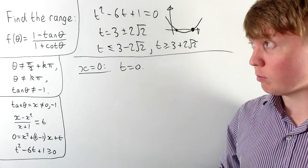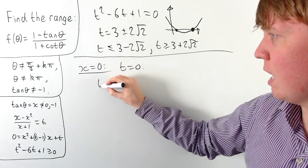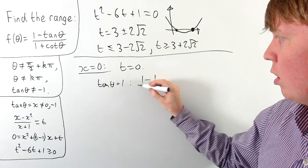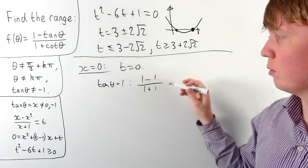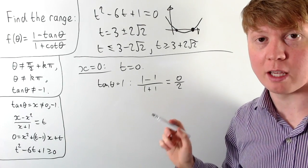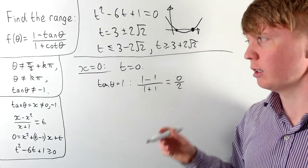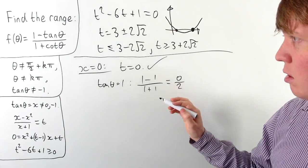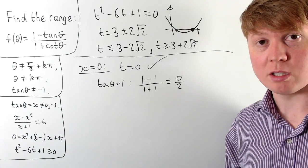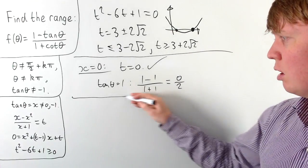Fortunately there's a way around this. We can actually substitute tan theta equals one: then our original function gives (1 - 1) / (1 + 1) = 0/2 = 0. So t = 0 is achieved for a different value of x (namely x = 1), which is perfectly valid. So t = 0 should indeed be in the range of our function.